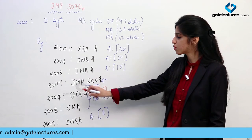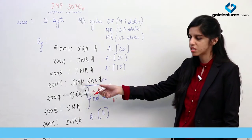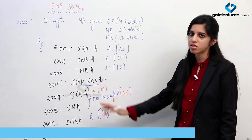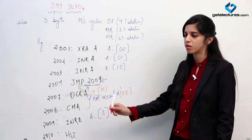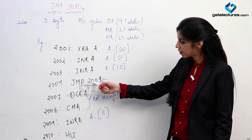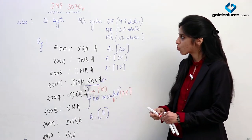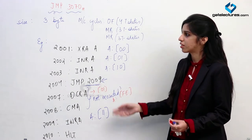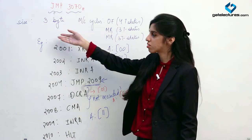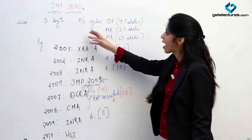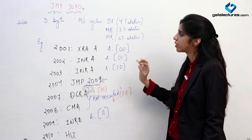Unconditional jump means whenever JMP with a 16-bit address comes, no instruction in between is going to be executed — you are going to jump directly to the address given. This is what happens in unconditional jump: it is a 3-byte long instruction with 3 machine cycles — opcode fetch and 2 memory reads.